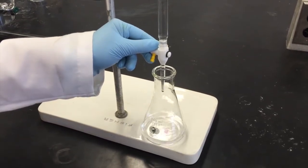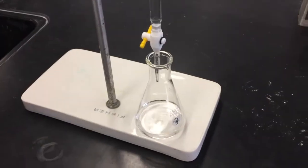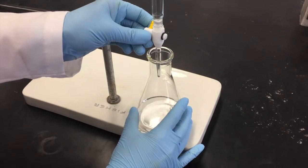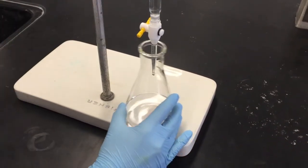When the pink color begins to linger, slow the addition of sodium hydroxide to one drop at a time. Add one drop, swirl until clear, and add another drop and repeat.